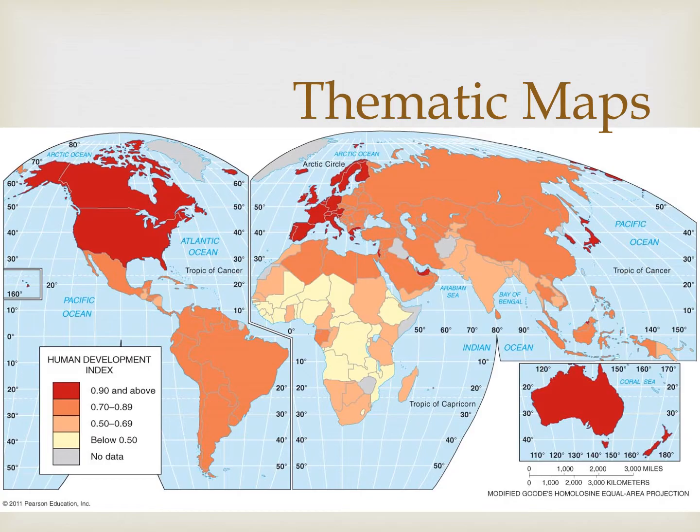Thematic maps, on the other hand, tell stories — and that is the most important note for this slide: thematic maps tell stories. What story do you think this map of the Human Development Index is telling us? Jot down some of your guesses in your notes. Thematic maps tell their story by showing the degree of some attribute or the movement of a geographic phenomenon.